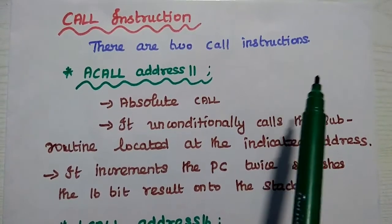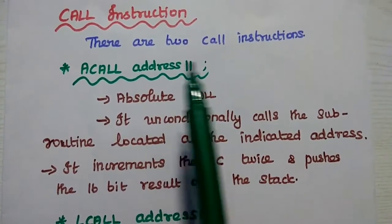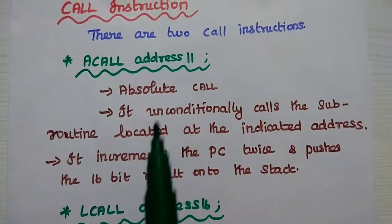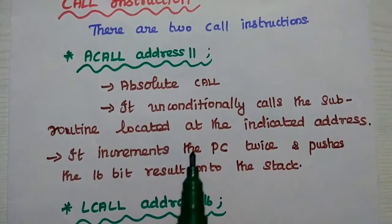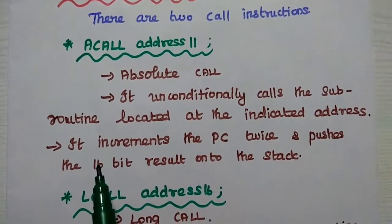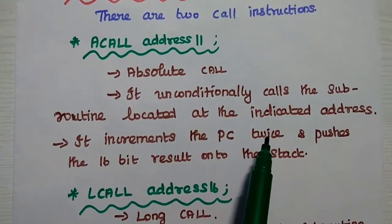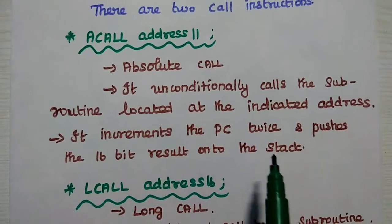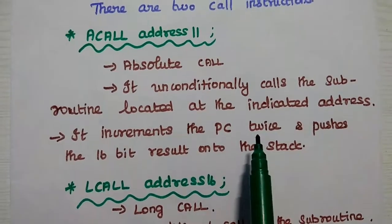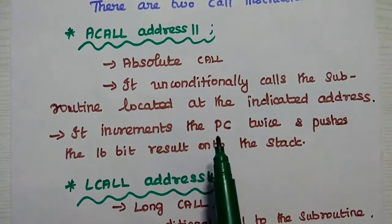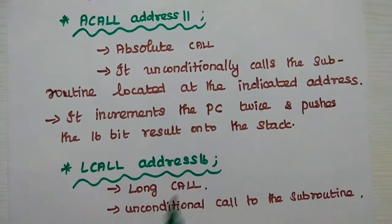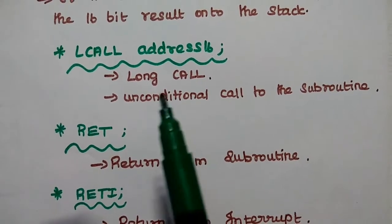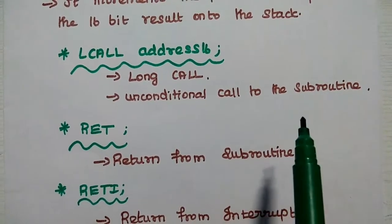The call instruction is used to transfer program control to a subroutine temporarily. Once the specific task is completed, it returns to the main program. There are two call instructions. The first is ACALL address11 — absolute call — which unconditionally calls the subroutine at the indicated address. It increments the program counter twice and pushes the 16-bit result onto the stack, so that after completing the subroutine we can return to the main program.